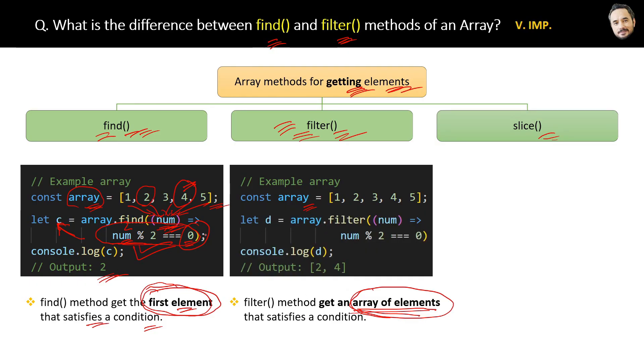Now the difference is that for whatever element this condition is true, all those elements will be added to the result array and that array will be finally assigned to this variable d. Got it? So this time you will get 2 and 4 in the result array because both elements satisfy the condition.